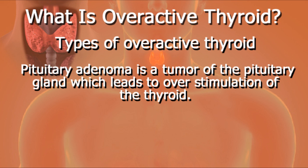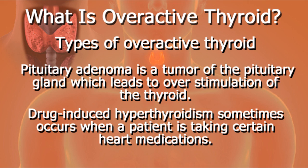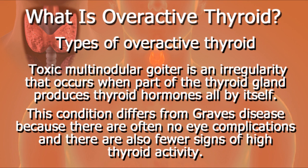Pituitary adenoma is a tumor of the pituitary gland, which leads to overstimulation of the thyroid. Drug-induced hyperthyroidism sometimes occurs when a patient is taking certain heart medications. Toxic multinodular goiter is an irregularity that occurs when part of the thyroid gland produces thyroid hormones all by itself. This condition differs from Graves' disease because there are often no eye complications and there are also fewer signs of high thyroid activity.